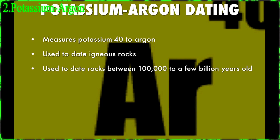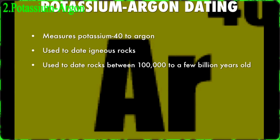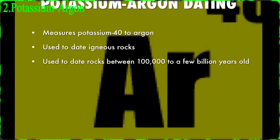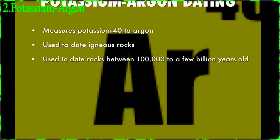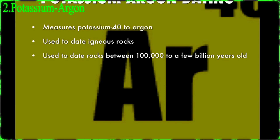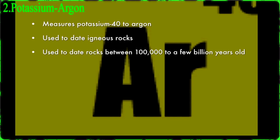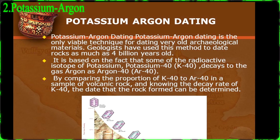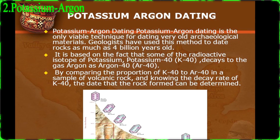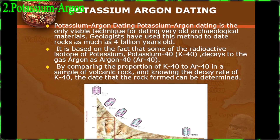A few dating methods use a similar and very reliable method by measuring the rates at which atoms decay. You know at least one of them — carbon dating. Now, potassium-argon dating. This particular method is based on the measurement of the radioactive decay of the isotope potassium into argon, which occurs at a stable rate.